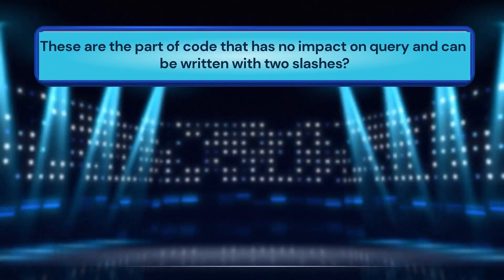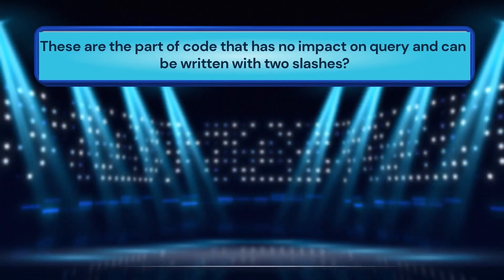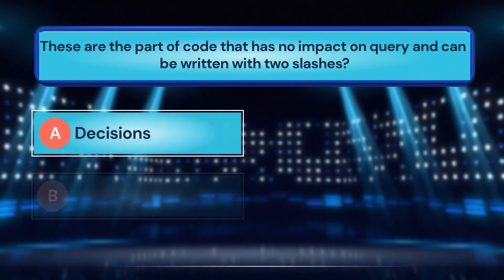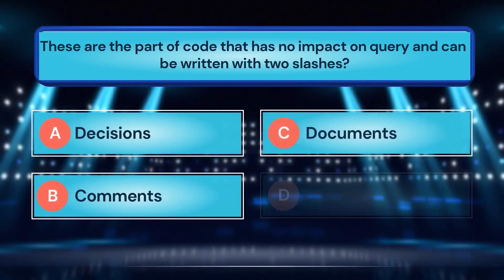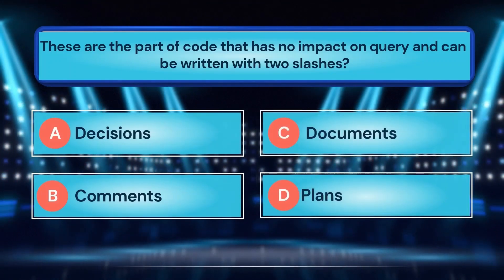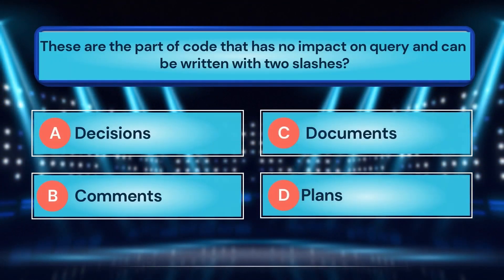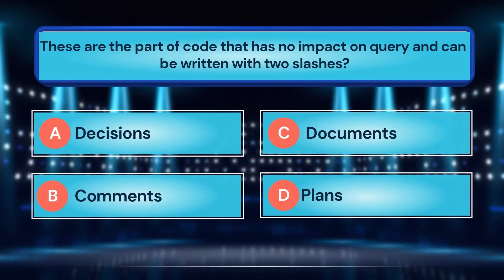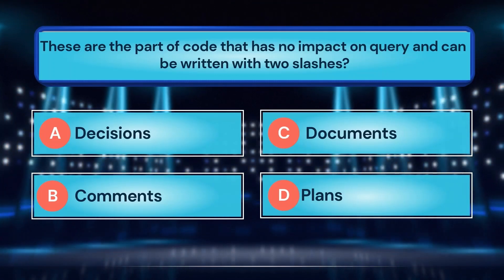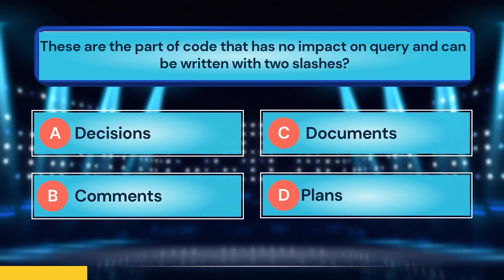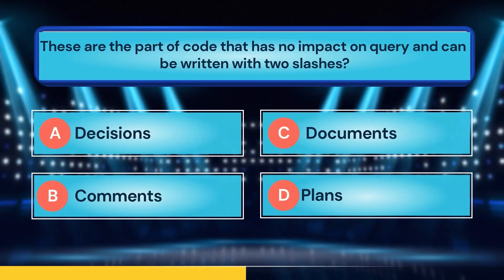These are the parts of the code that have no impact on the query and can be written with two slashes. A. Decisions. B. Comments. C. Documents. D. Plans.